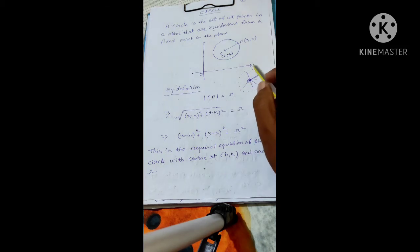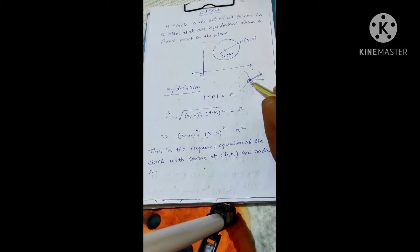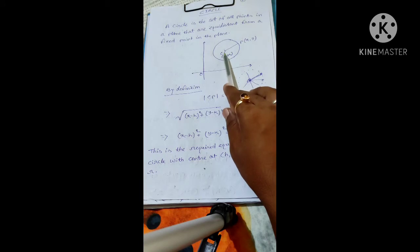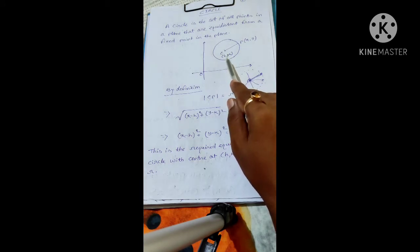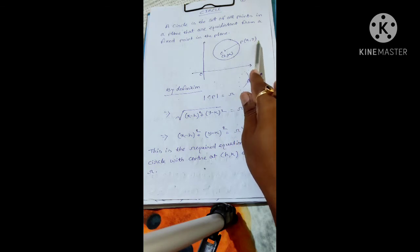So, what is a circle? If from a fixed point we take a cluster of points — a set of points which are equidistant from this fixed point — then that figure is called a circle. Here I have taken a circle, and the fixed point, that is the center, has coordinate h, k, and I have taken a point on the circumference of the circle, say P(x, y).